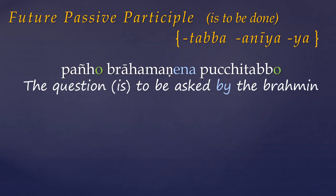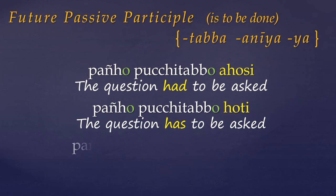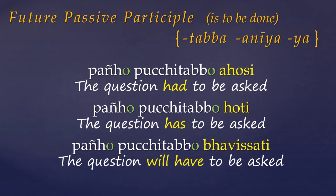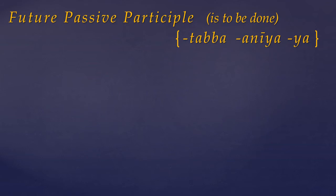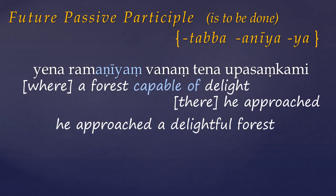Also like past participles, a future passive participle can be used periphrastically with an auxiliary verb to express the tense, in which case they tend to imply the perfective verbal aspect. So we can form: the question had to be asked, the question has to be asked, or the question will have to be asked. By using different forms of the verb to be, we can produce different tenses. And as well as obligation, the future passive participle can express a wide range of meanings: from capable of, prone to, or fit for. And in the neuter, it can also be used as a noun.